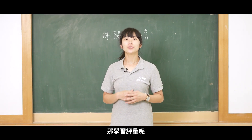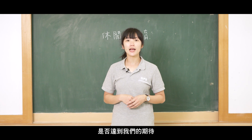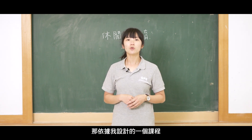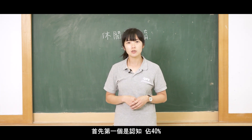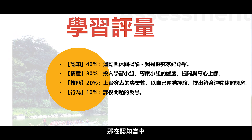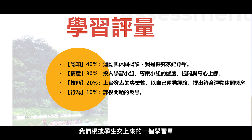接下來我們要進行學習評量。學習評量是根據學生在上述的兩節課程當中，是否達到我們的期待，並且跟學習表現互相對應。依據我設計的課程大概有分為四個學習評量的依據。首先第一個是認知，佔百分之四十。在認知當中，我們其實可以透過三種的課程議題，讓學生分別去探究、去思考以及進行討論。